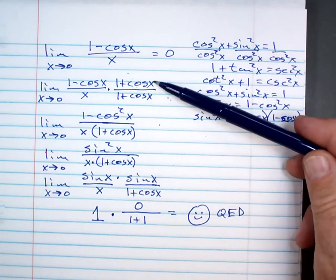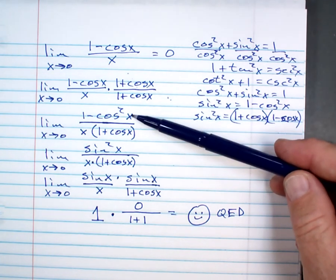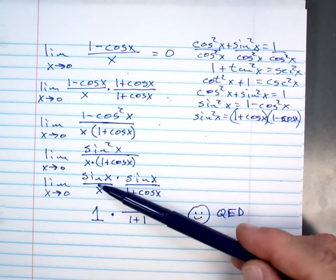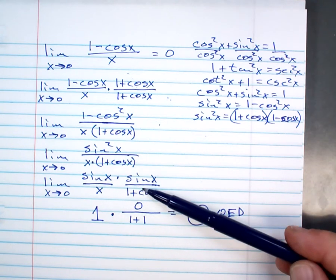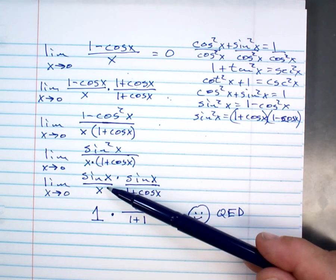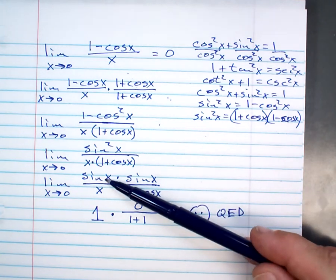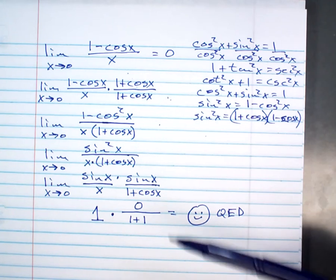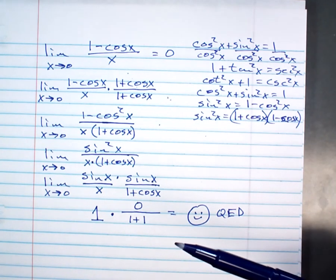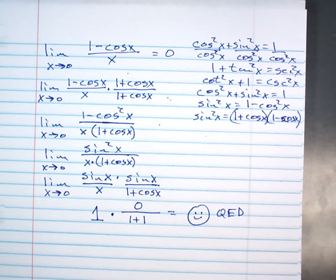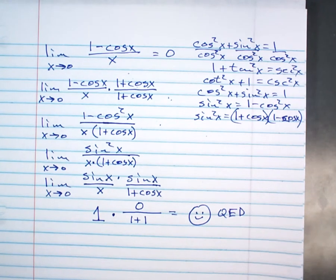The biggest thing is multiply it by the conjugate, getting this, which is sine squared, and then breaking up sine squared into two separate fractions, and figuring out the limit of the first fraction and figuring out the limit of the second fraction. And if we didn't have this, you wouldn't be able to prove that. So, that's why I had to do that first. Alrighty? Okay. So, now let's take a look at the examples.